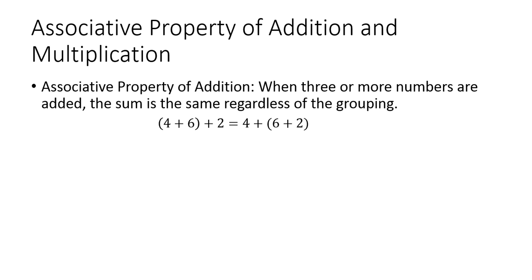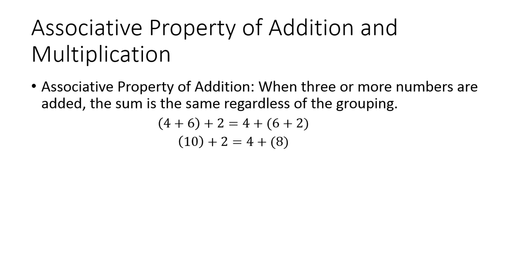Simplifying this down, I'm going to work within my parentheses. Four plus six is equal to ten, and then plus two. On the other side, four plus and then six plus two is eight. Continuing to simplify: ten plus two is twelve, and four plus eight is also equal to twelve.